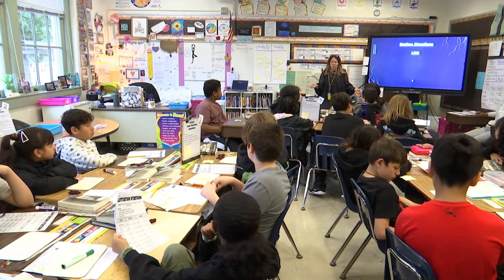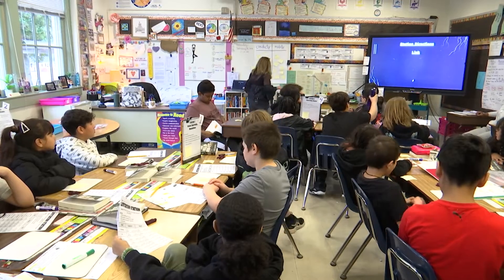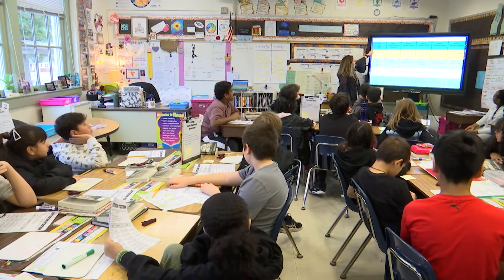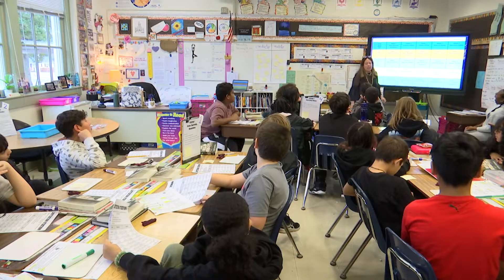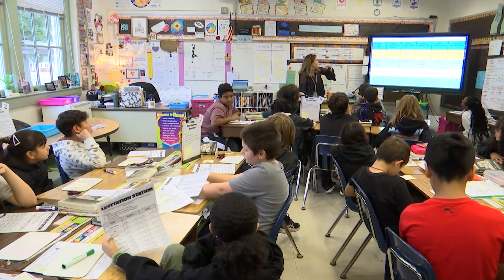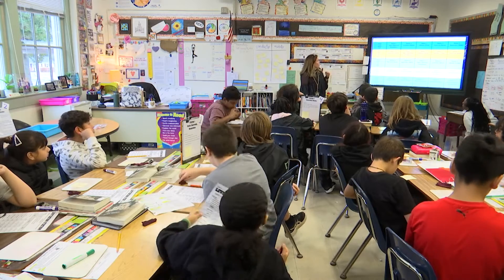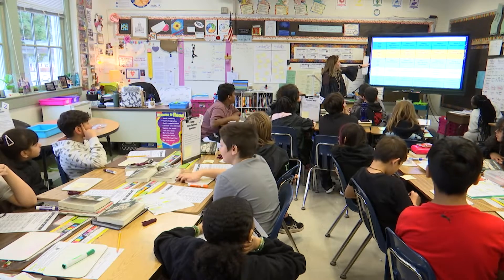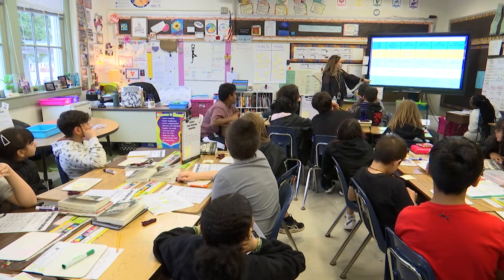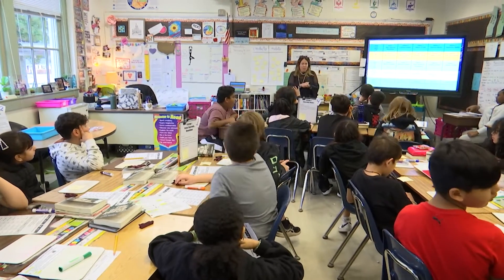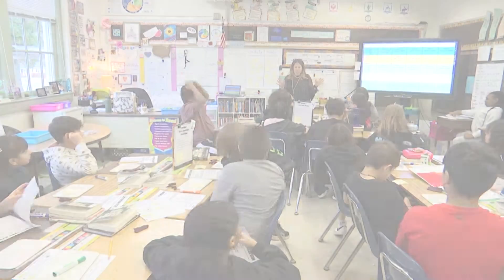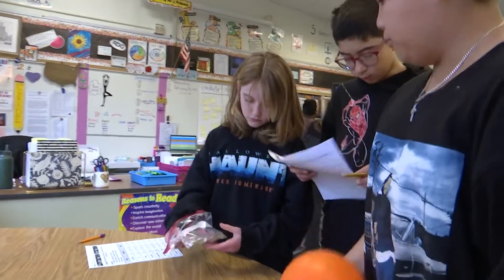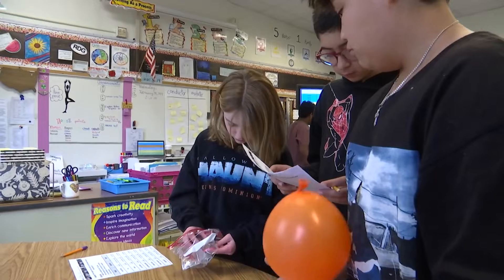Here are your groups. We're going to be at each station for seven minutes and I'll tell you when to move. The blue group starts at station one, the orange group at station five, the purple group at station four, yellow at station three, and green at station two. Everybody good on where they're going?